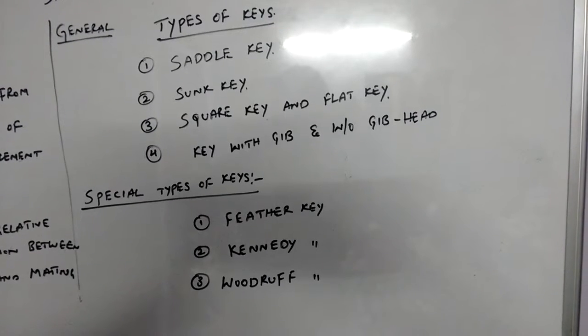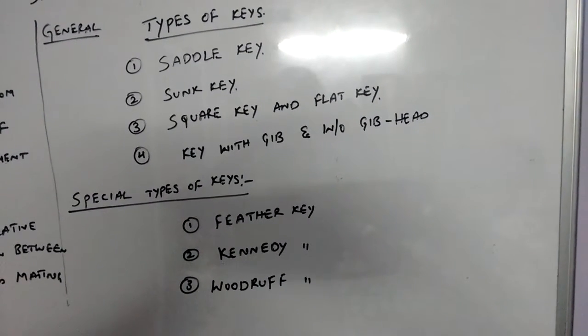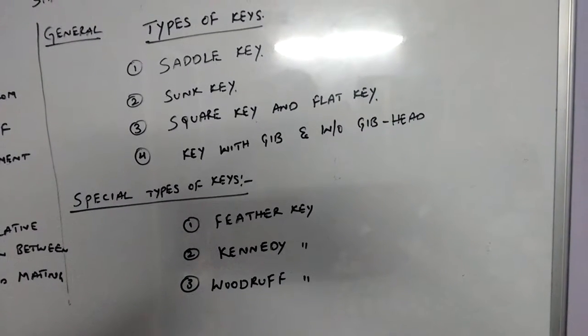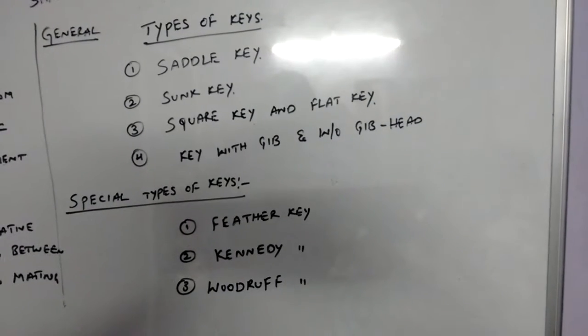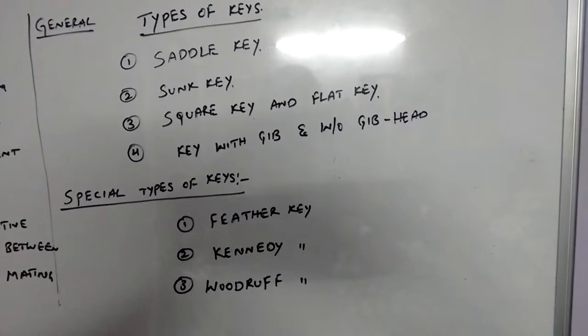Generally, this saddle key can be used for light load application because the torque transmission between this shaft and the mating element is because of frictional force. That's why only one keyway is provided in this saddle key that is in the hub.